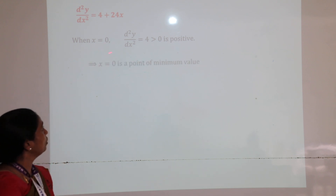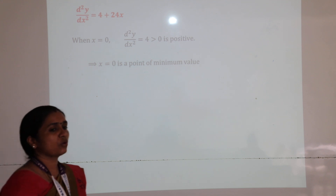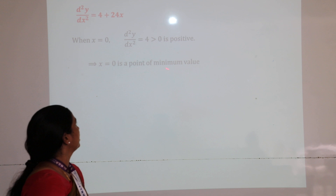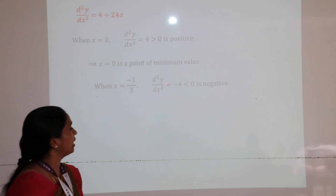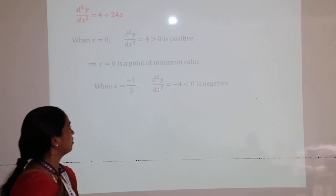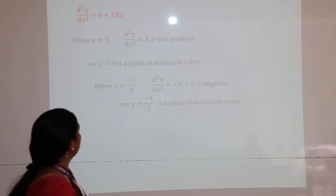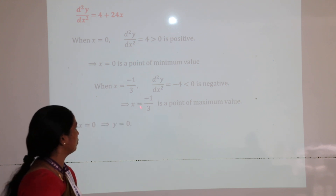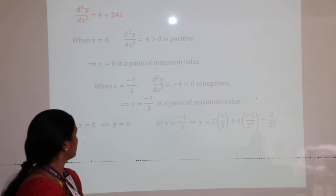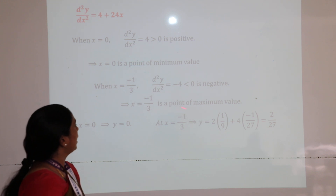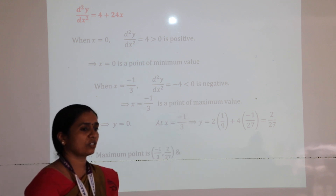First, the stationary point x = 0: substituting into d²y/dx², the value becomes +4, which is greater than 0 — a positive value. So this point is the minimum point; x = 0 is the minimum point. For the next stationary point, x = −1/3: the value of d²y/dx² becomes −4, which is less than 0, so it is automatically understood to be the maximum point. So we are getting one minimum point at x = 0 and one maximum point at x = −1/3. These are the stationary points and their nature.